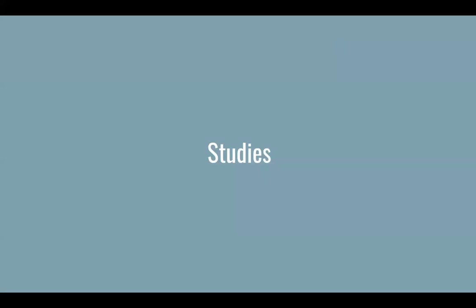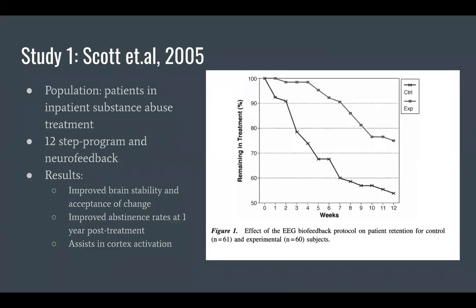The first study is Scott et al., published in 2005, a study done by UCLA that examined the effects of neurofeedback on patients in an inpatient substance abuse program, looking at a combination of neurofeedback and a 12-step program. It was shown that this combined treatment protocol improved abstinence rates one year into recovery, and assisted in cortex activation, helping improve abstinence levels by deterring resistance to treatment and recovery.